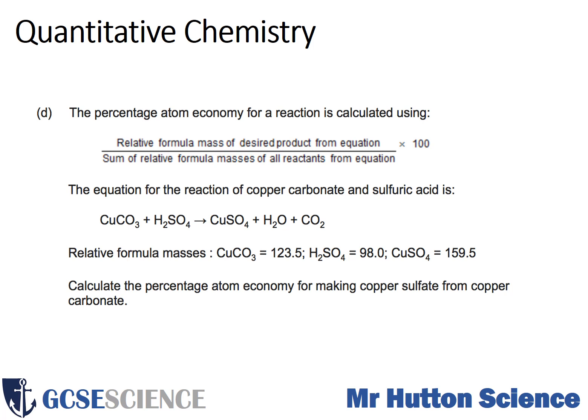The third question is about atom economy. The percentage atom economy for a reaction is calculated using the formula provided. The equation for the reaction of copper carbonate and sulfuric acid is given to you, and it even gives you the relative formula mass of the compounds within that reaction. You're then asked to calculate the percentage atom economy for making copper sulfate from copper carbonate.